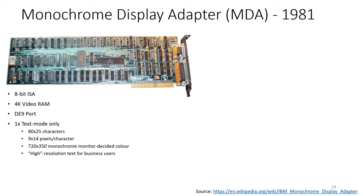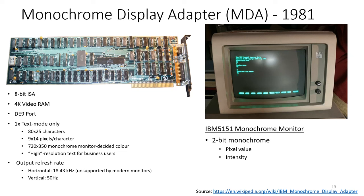The MDA refresh rates - the horizontal refresh rate is not supported by modern monitors. It was paired with the IBM 5151 monitor. It can only have two monochrome pixel values: on and off, plus intensity. You can actually use CGA and MDA together - you can have two screens, one doing text and the other doing graphics. This works because these two operate at different memory addresses.